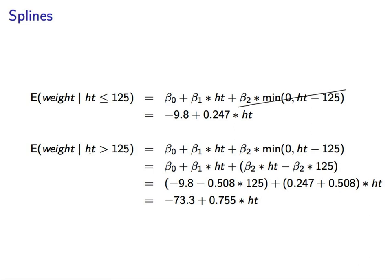That's fairly simple. Now, when we predict the expected value of weight given height greater than 125, we have beta 0 plus beta 1 times height plus beta 2 times this thing over here. It's never going to be 0 because we're always greater than 125 here, so we will have height minus 125. We can distribute beta 2 into there, and we have beta 2 times height minus beta 2 times 125. And then we can regroup those terms, since this part here is a constant term. We'll put it over here with the intercept beta 0, and then these two terms here we will pull together times height. And we get the new equation for the slope as, or for the line as negative 73.3 plus 0.755 times height.